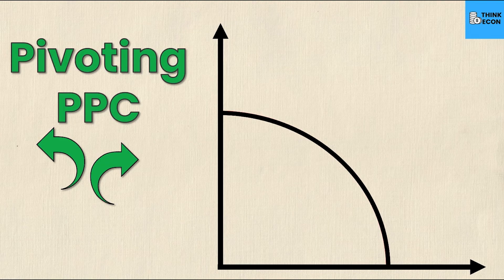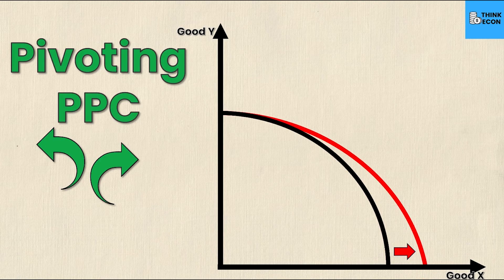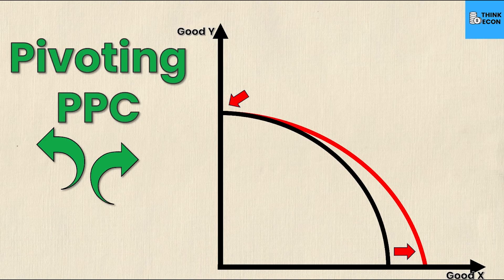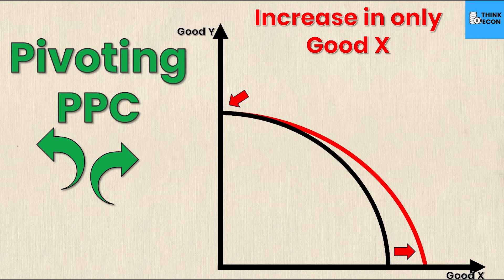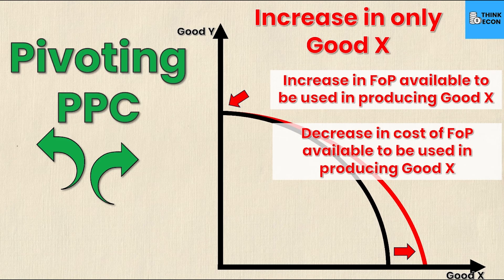Once again we need a fully labeled graph with good Y on the y-axis and good X on the x-axis — these could be any goods, normally given to you in the problem. The first pivot: the x-intercept has moved to the right while the y-intercept has not moved at all. This is an increase in only good X, meaning I can produce more of good X but the same amount of good Y. This happens because of an increase in the factors of production available for producing only good X, or a decrease in the cost of those factors for good X only.